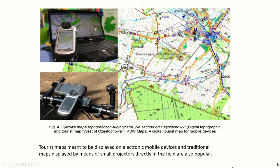Nowadays, two types of tourist maps exist. The first is traditional maps, displayed by means of small projections directly in the field. The second is digital topographic maps, designed to be displayed on electronic mobile devices. A digital topographic tourist map is useful for bicycle tourists and mountain climbers, providing the user's present location and the shortest path to a tourism destination.